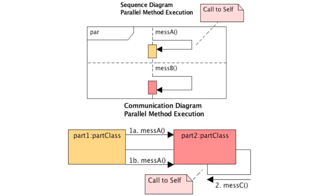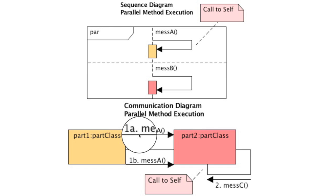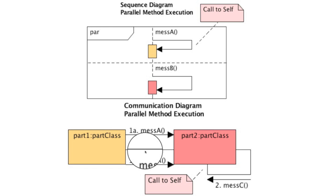Now we move on to multiple messages executed at the same time. With sequence diagrams, we had to surround those with sequence fragments if we wanted to show messages sent in parallel. However, with communication diagrams, what we're going to do is simply add a letter onto the message number. The first message sent in parallel gets an A, then B, then C, D, E, F, G, and just keep going on and on.